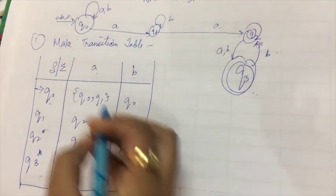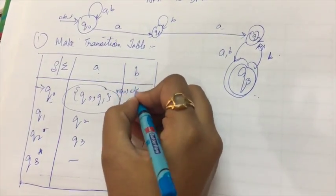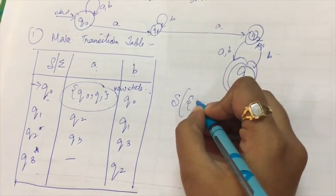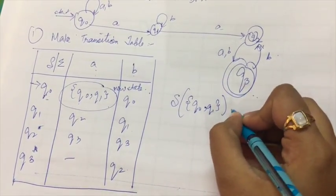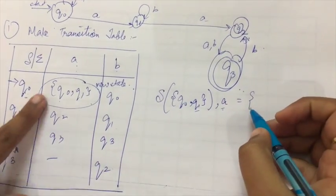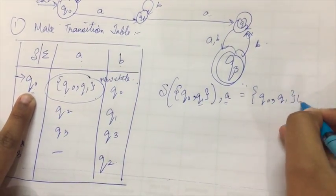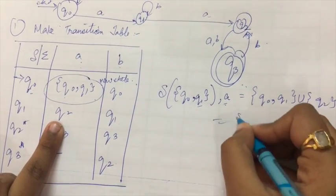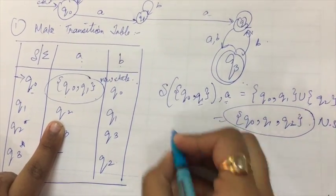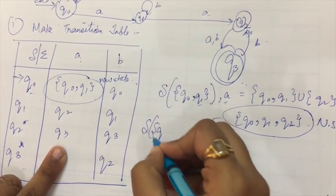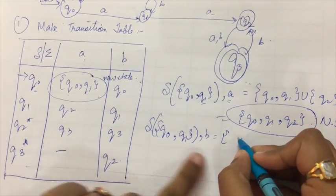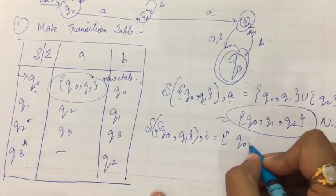From the transition table, we see new states appearing. We now check transitions for this new state. The transition of {Q0, Q1} with A gives us: transition of Q0 with A union transition of Q1 with A. Q0 with A gives {Q0, Q1}, and Q1 with A gives Q2 — so we get a new state {Q0, Q1, Q2}. Before finding transitions for that new state, we find the transition of {Q0, Q1} with B, which gives Q1 — not a new state.